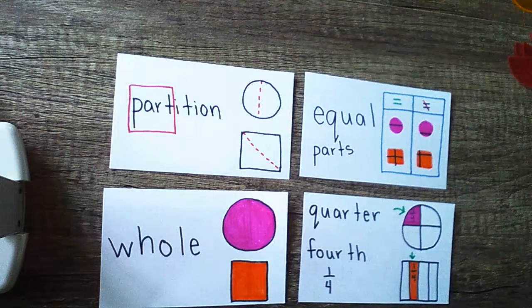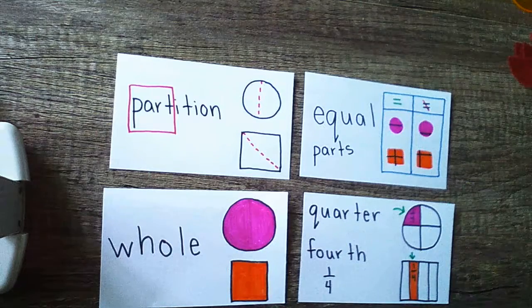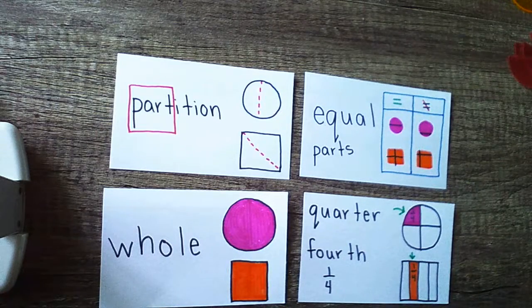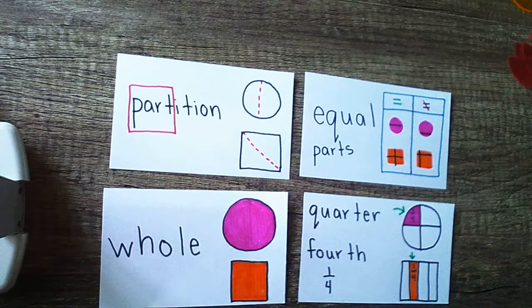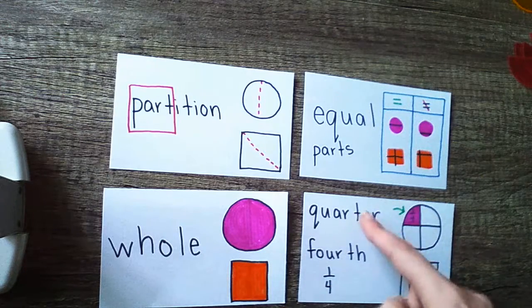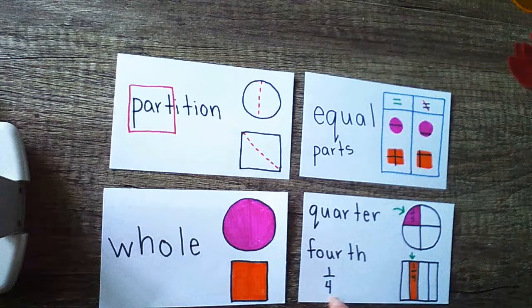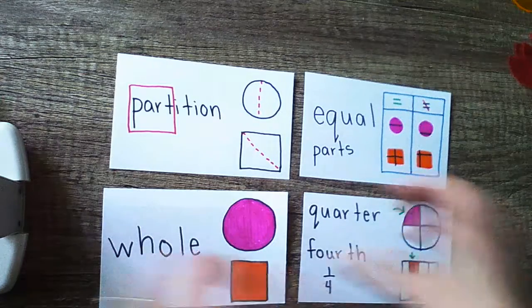Quarters and fourths, those are the same thing. If you think about quarters like the money, you need four quarters to make a dollar. Each quarter is one part of the four parts or quarters you need to make a dollar. A quarter and a fourth means you have one piece or one part of your whole.